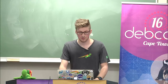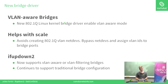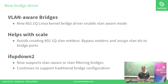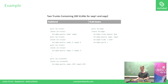The new bridge driver: the Linux kernel now supports VLAN-aware bridges, also called VLAN filtering mode, and IfUpDown2 supports both traditional and VLAN-aware bridge modes. It helps with scale. Here's a quick example of how you would configure for 200 VLANs in both the traditional model and the new VLAN-aware mode.